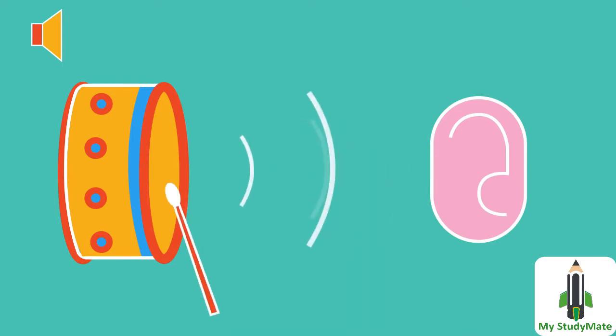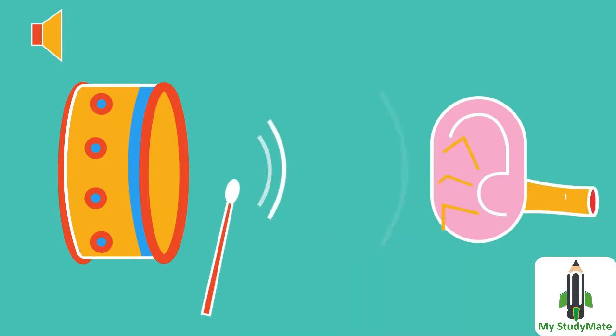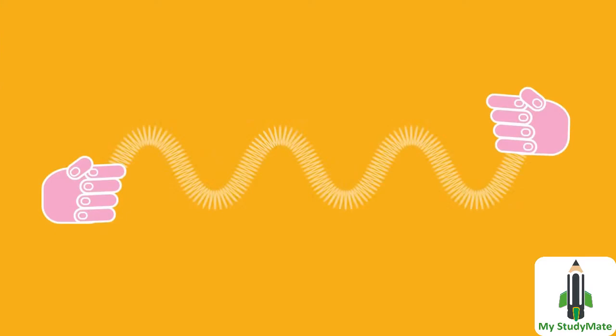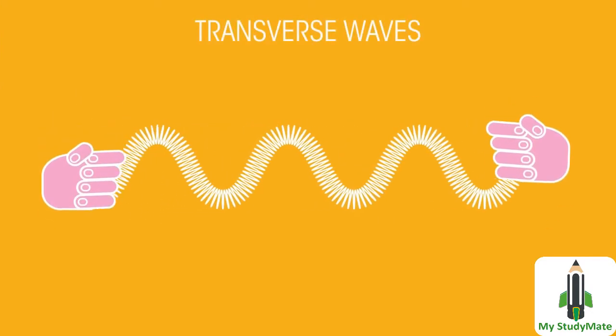This causes the next air particles to vibrate, then the next and so on until the vibration reaches the ear causing the eardrum to vibrate. The vibrating air spreads away from the source creating a sound wave.